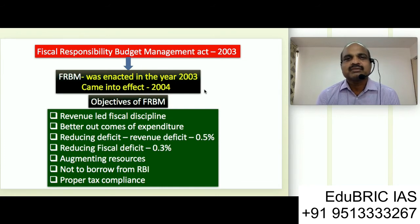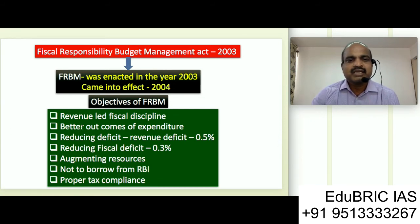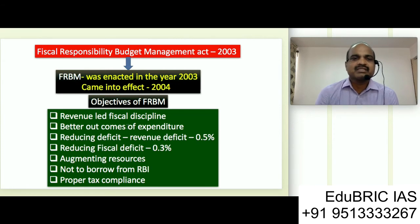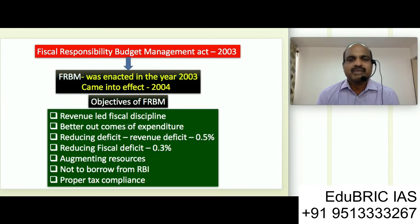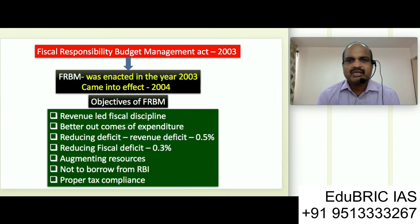Apart from having a target of reducing revenue deficit, revenue deficit has to be decreased by 0.5% every year and fiscal deficit has to be reduced by 0.3% every year — so there is a clear target set when this Act was passed. The second important objective of the Fiscal Responsibility and Budget Management Act is better outcomes of expenditure. For example, if I spend one rupee on a certain objective, am I really earning some revenue from that? When we spend money, we need to ensure there will be a return on the expenditure.